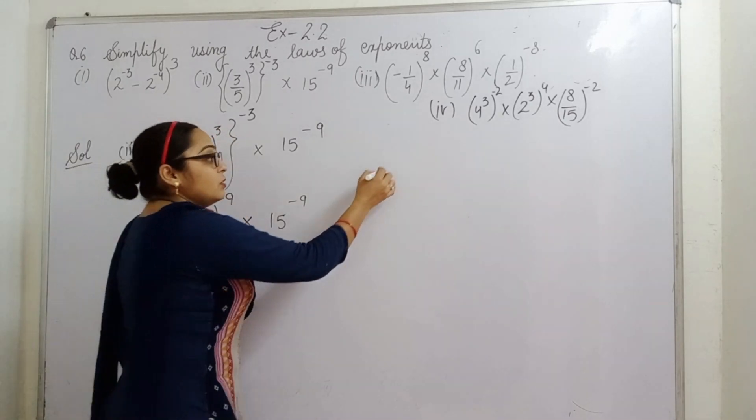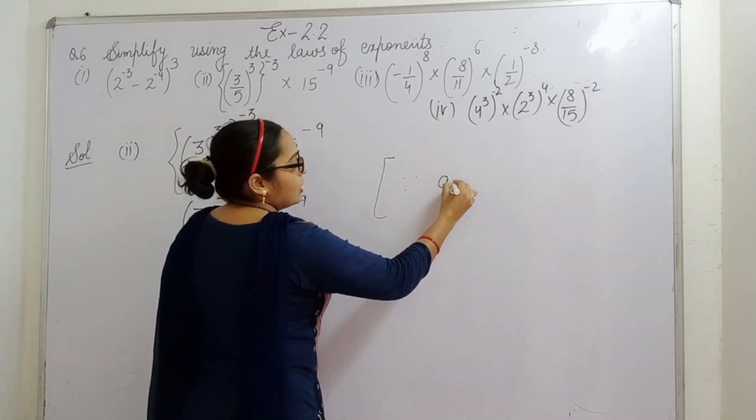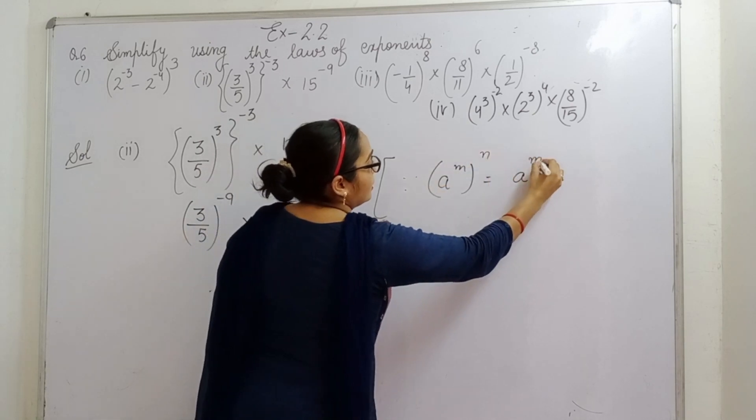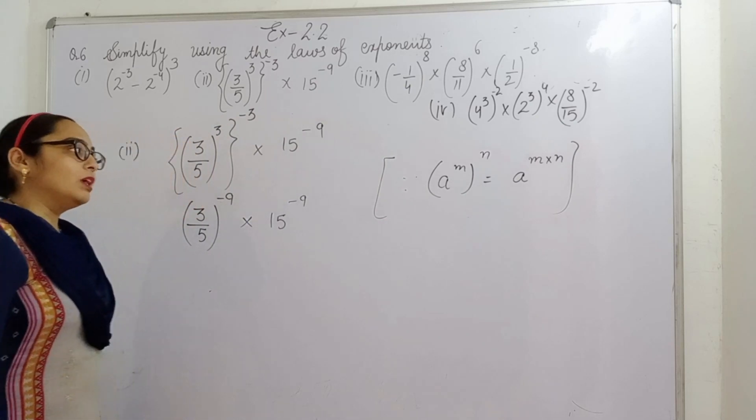Which law of exponent we have used here? This one: a raised to power m, power raised to power n, then powers ko multiply karna hai.